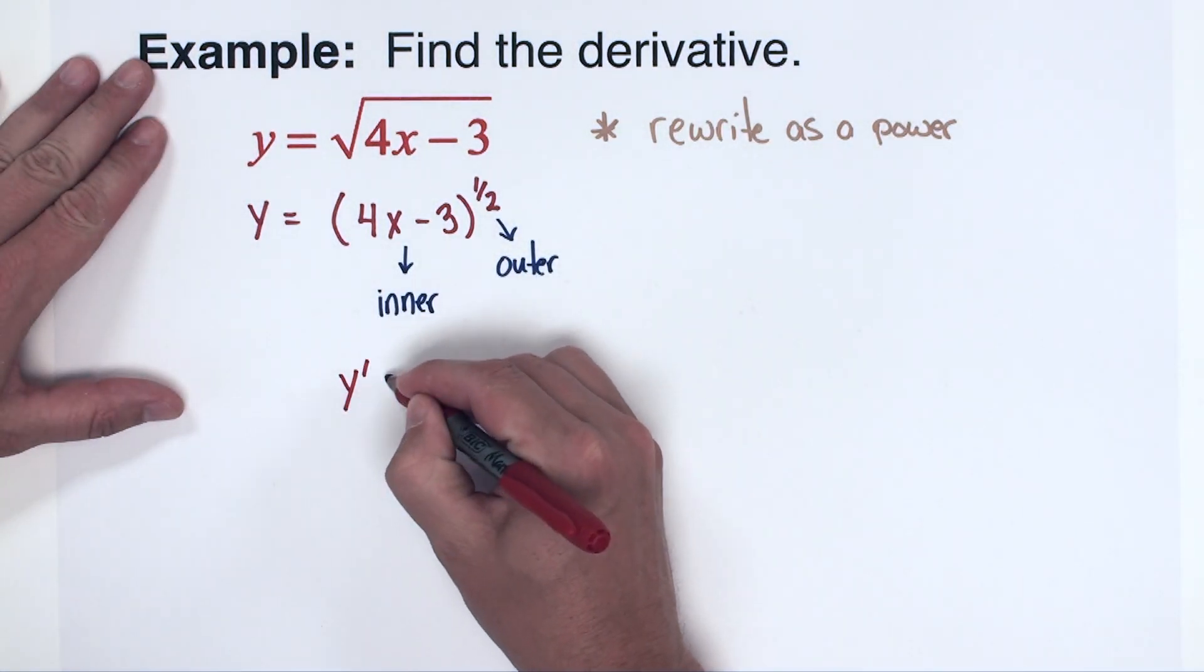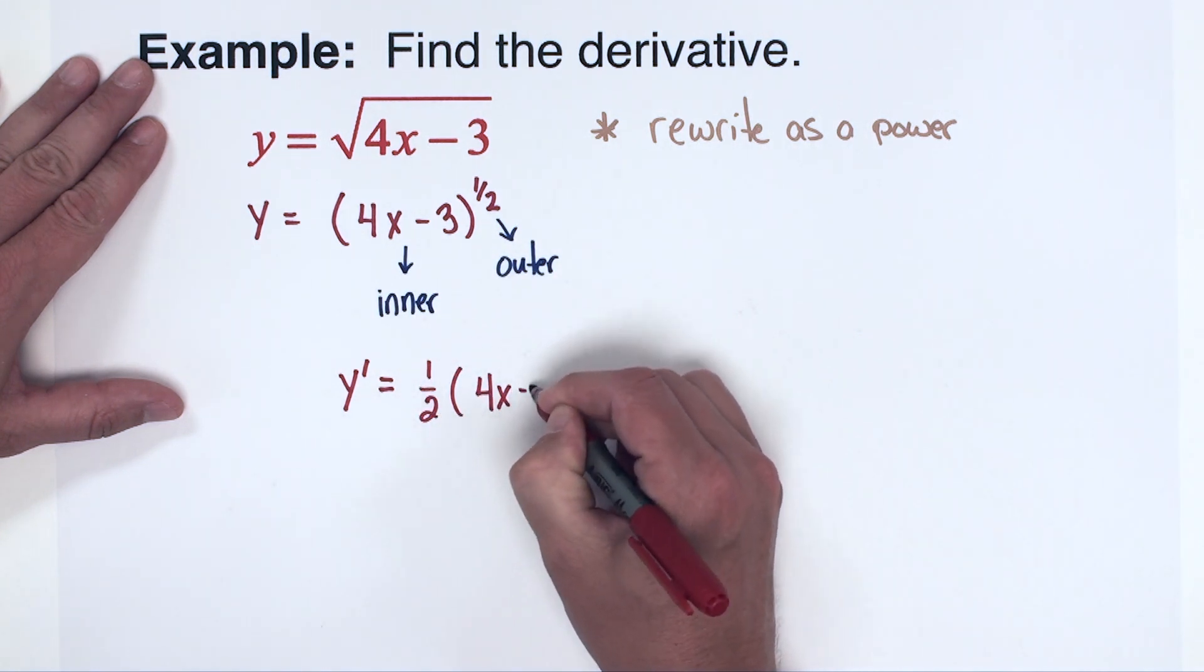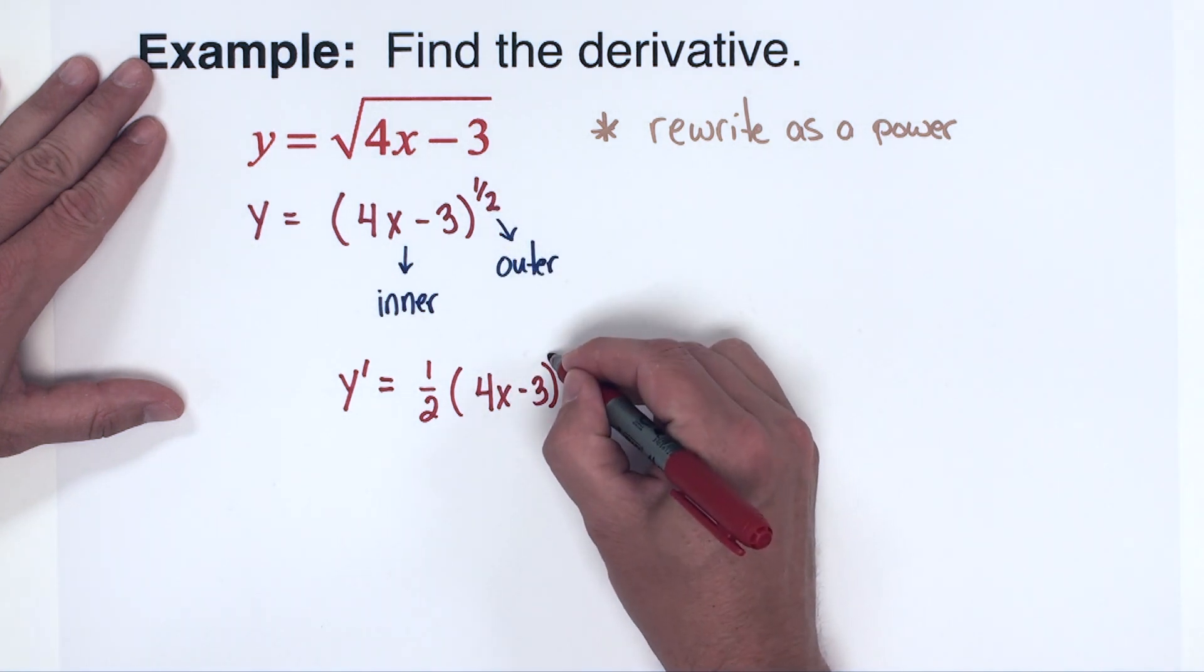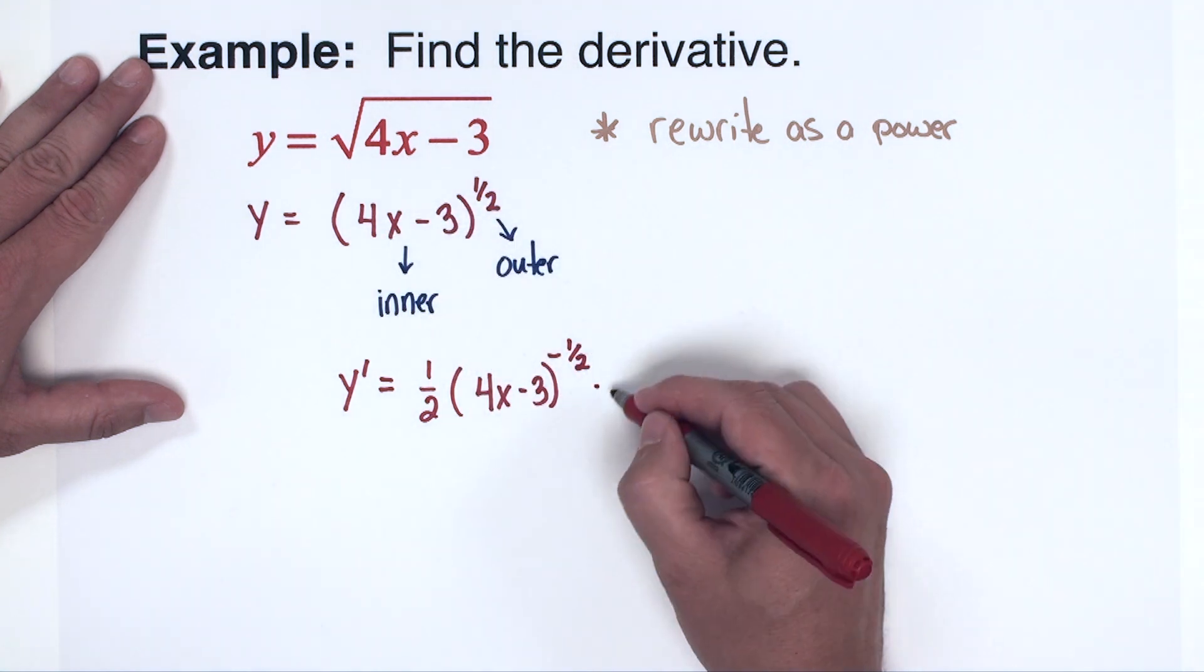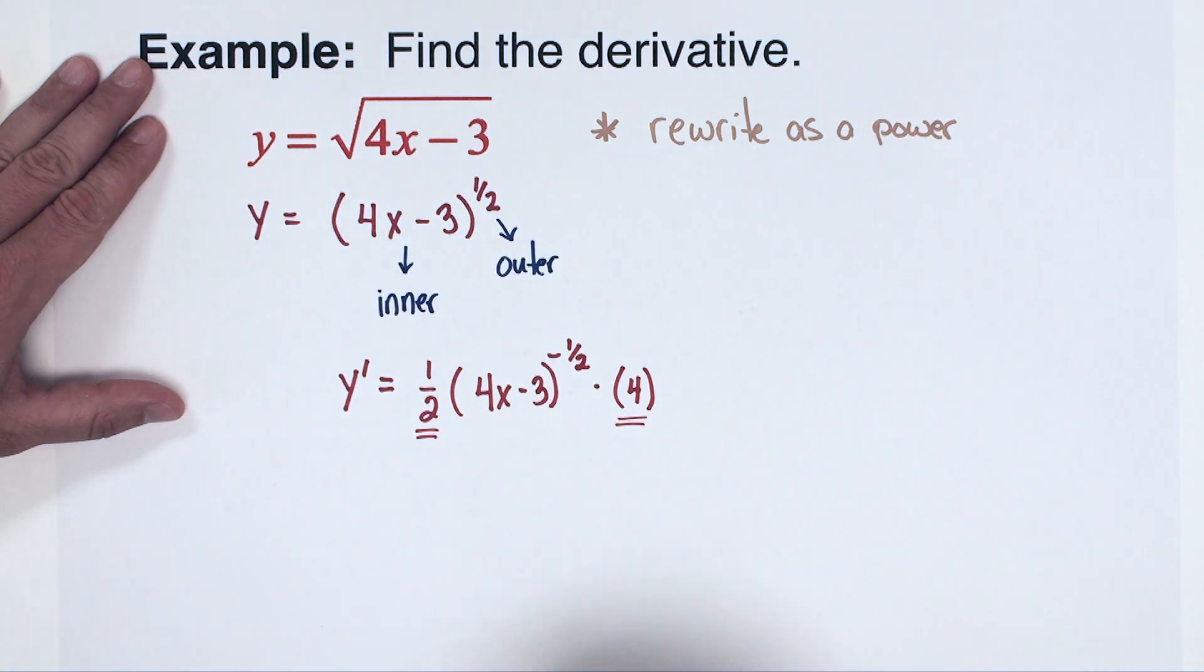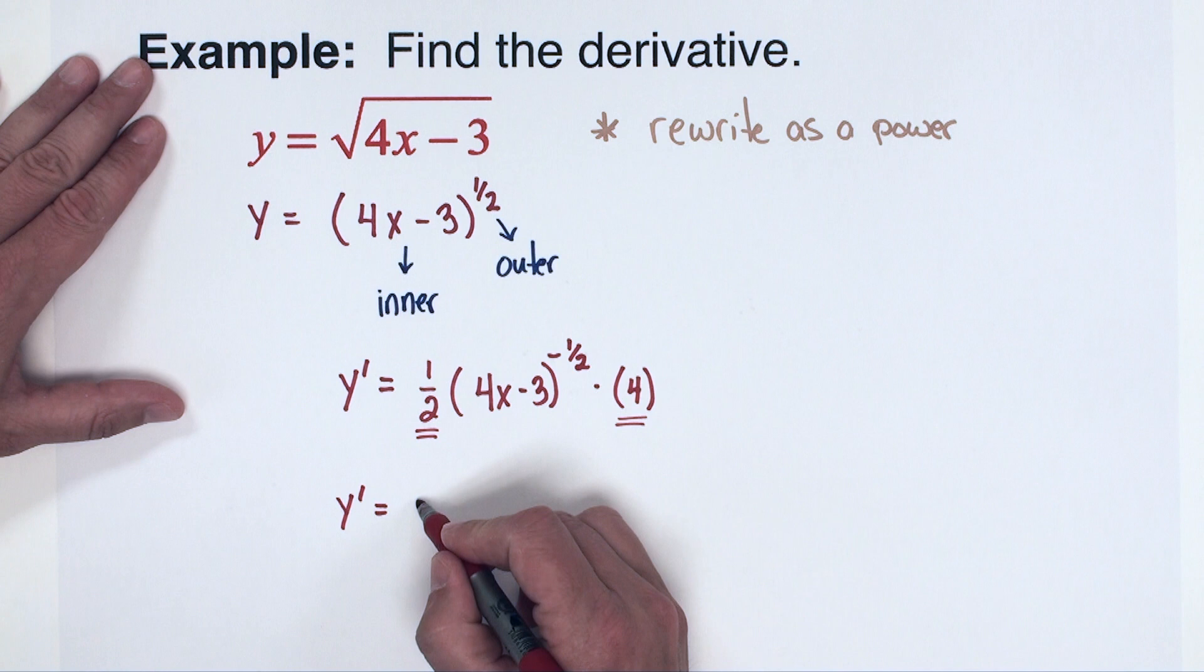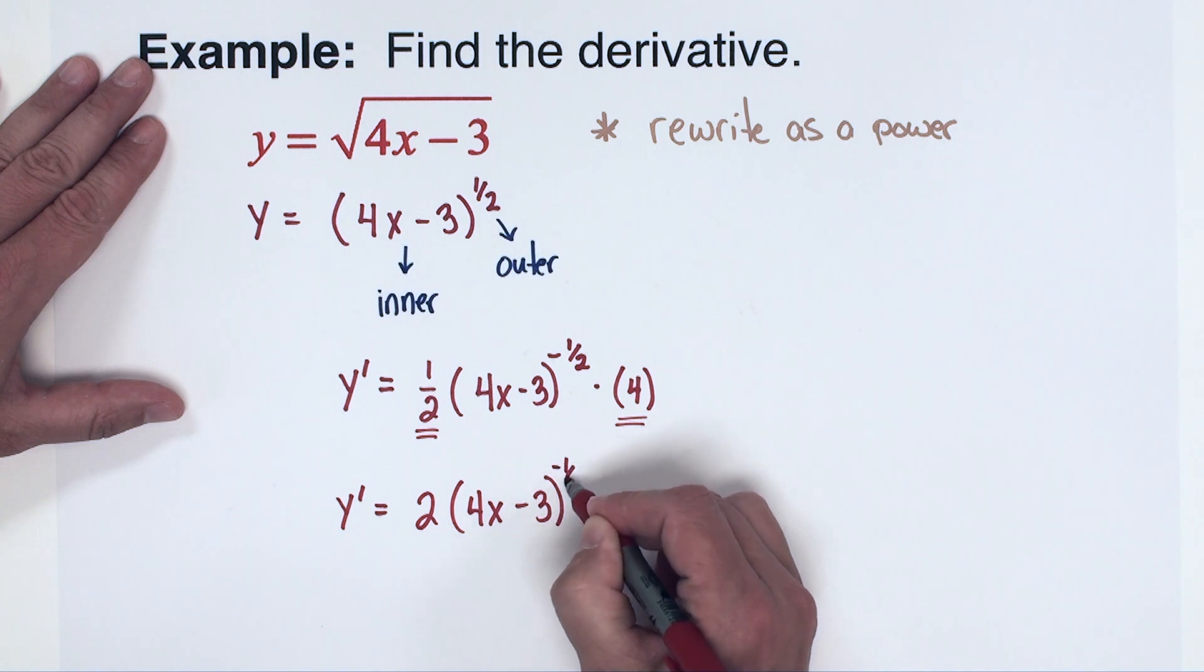So let's go ahead and get started. The derivative, power rule first. So one half out in front. Now we got to subtract one from the power, so if you take away one from one half you get negative one half. And now we're going to do the chain rule part which is the derivative of the inside. Derivative of 4x minus 3 is 4. Now these two numbers can go ahead and multiply together. So we have y prime equals 2 times the quantity 4x minus 3 to the negative one half.